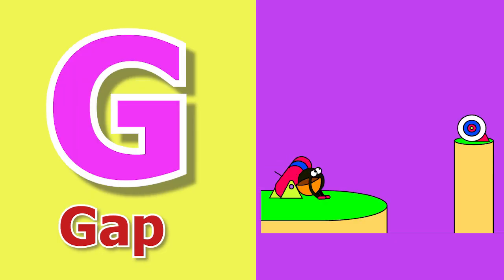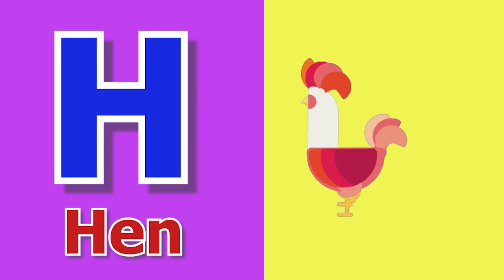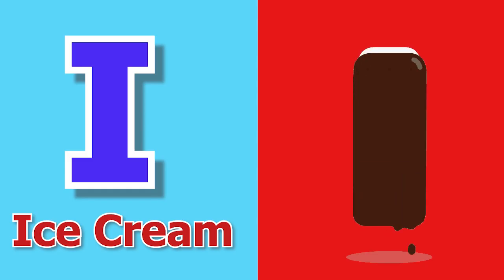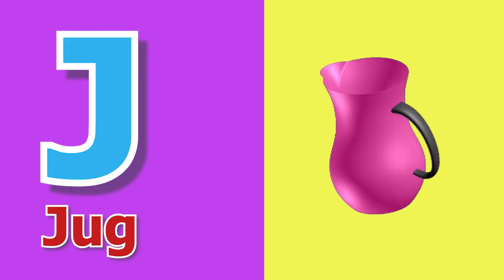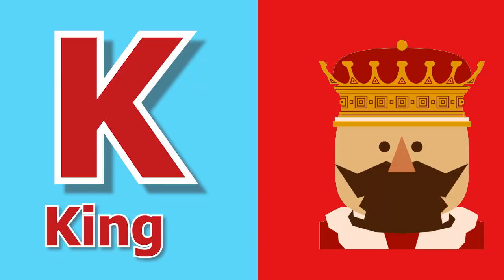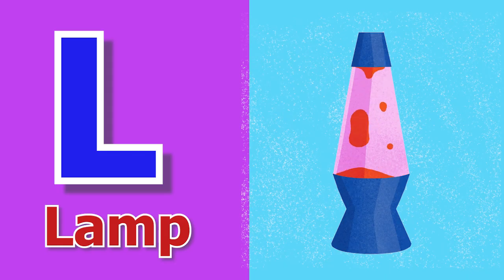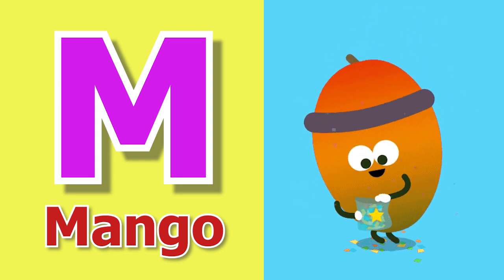G for Gap, H for Hen, I for Ice Cream, J for Jug, K for King, L for Lamb, M for Mango.